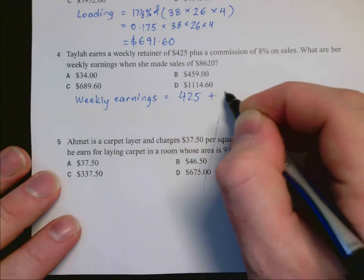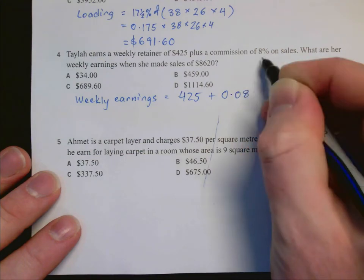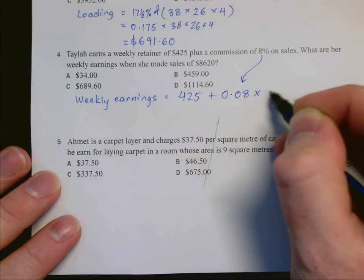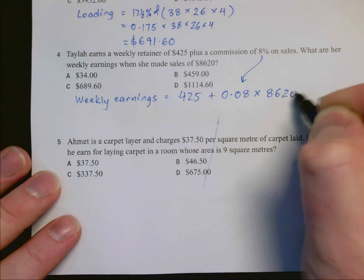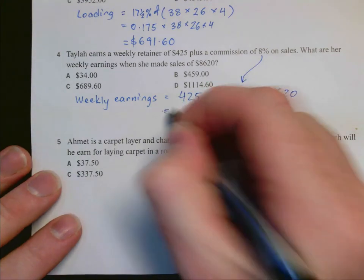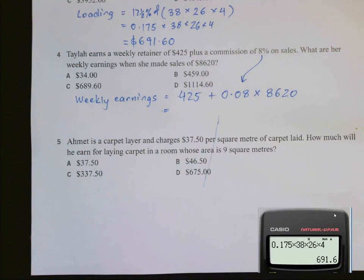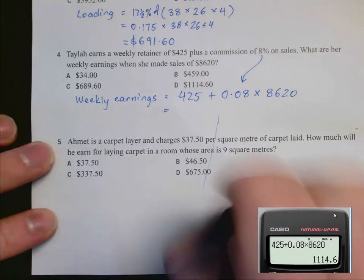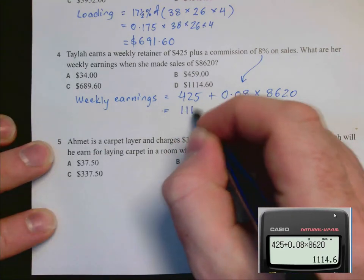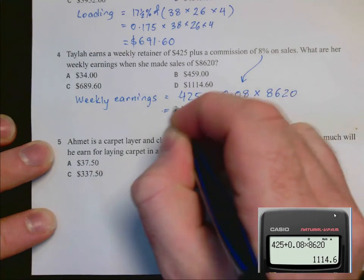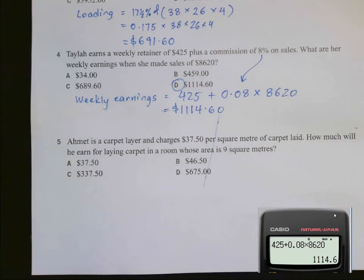Plus she receives a commission. So 8% becomes 0.08 of, so times the sales. And we enter that on a calculator. And we get $1,114.60 which we can see is D.